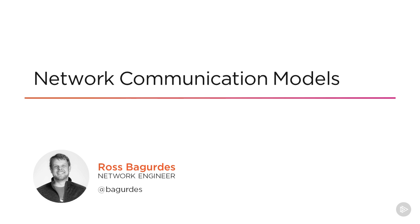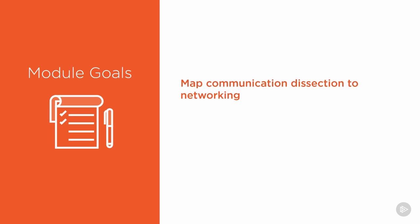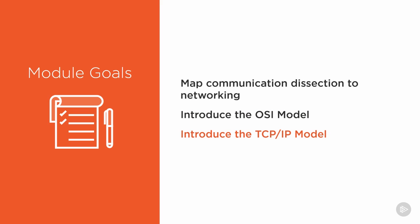Right now let's move into network communication models so we can continue the conversation we started with the previous module. Our goals this module are to map our communication dissection that we did last module to data networking communications. I want to use that as a launching pad to talk about the OSI model and the TCP/IP model for network communication organization. These are literally critical in understanding how networking works, and I want to give you as much information as I can so that you can make use of these models to understand data networking.